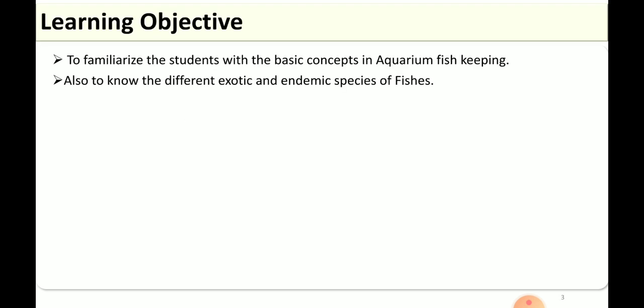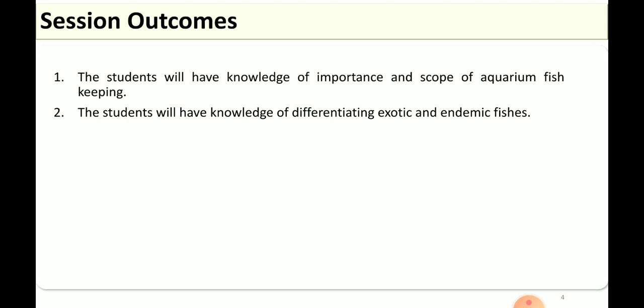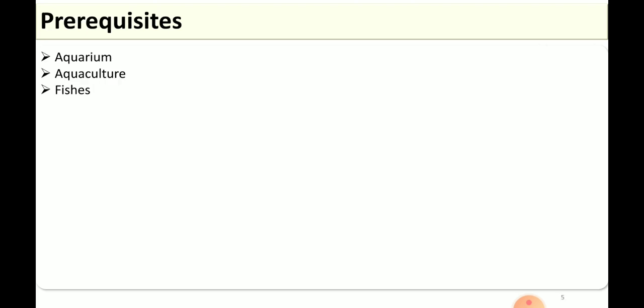These are the objectives of this session: to familiarize the students with the basic concept of aquarium fish keeping, and also to know the different exotic and endemic fish species. After studying this session you will come to know the important scopes of fish keeping in an aquarium, and also you will have a wide knowledge of differentiating exotic and endemic fishes.